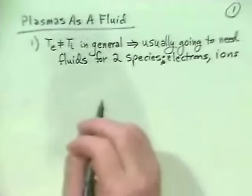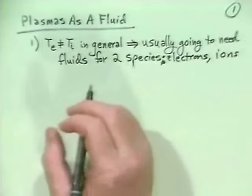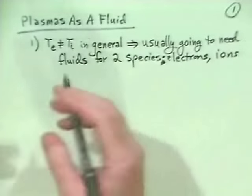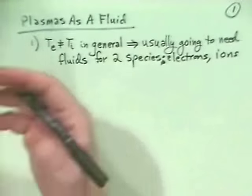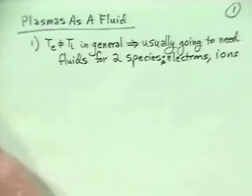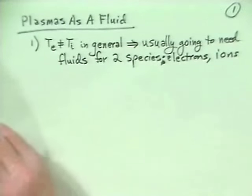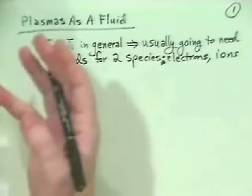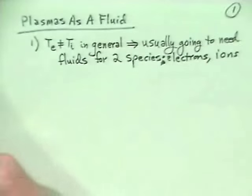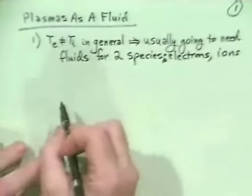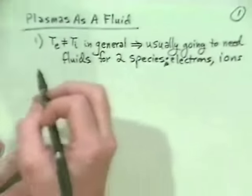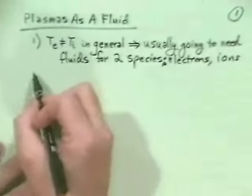Sometimes we'll be able to add electrons and ions together and they all act as one fluid, in which case we would call that magnetohydrodynamics, or fluid-like, or almost like Navier-Stokes equations.